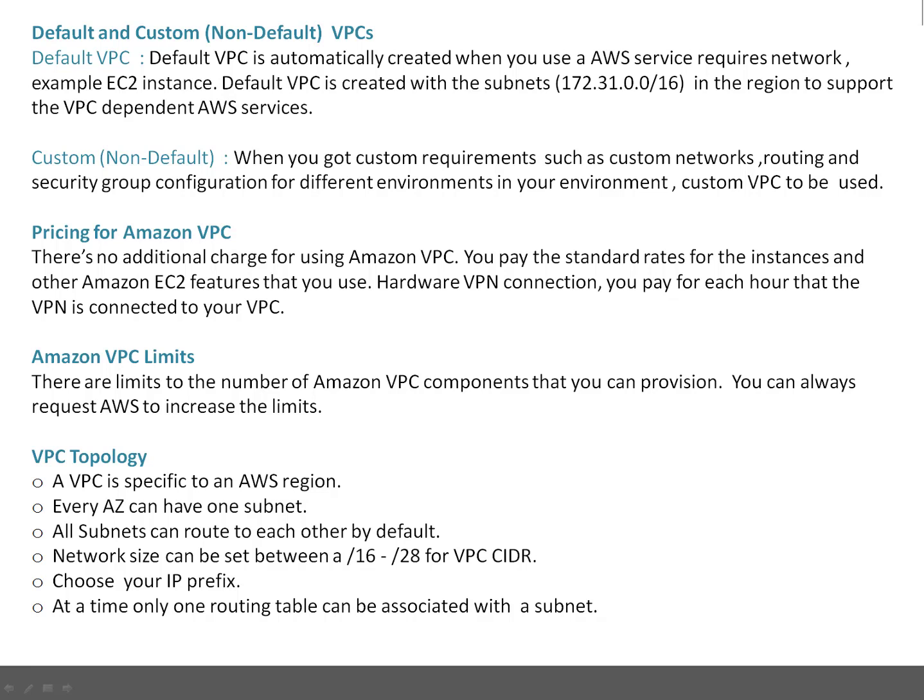Regarding VPC topology: a VPC is specific to an AWS region. Every availability zone can have one subnet, and all subnets can route to each other by default because that's the default Amazon model. Network size can be set between /16 and /28 for the VPC CIDR. You can choose your own IP prefix, and at a time only one routing table can be associated with a subnet.